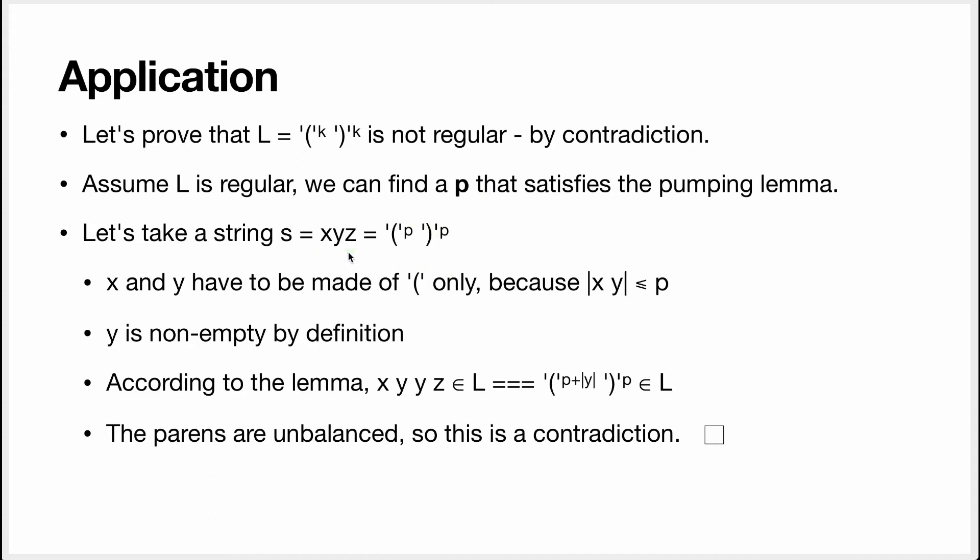So let's talk about that decomposition. x and y have to be made only of opening parentheses, because we have this condition that says that the length of xy is smaller than p, so they are necessarily opening parentheses. By definition, the size of y is bigger than 1, so it is not empty.